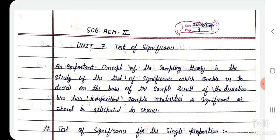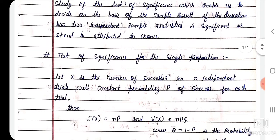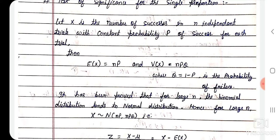To calculate the test of significance for different types of proportion, we first discuss the test of significance for single proportion. Let x be the number of successes in n independent trials with constant probability P of success for each trial. Then E(x) equals np, where E(x) represents the mean value — the mean of the binomial distribution is np. Here n is very large, and variance of x equals npq, where q equals 1 minus p, the probability of failure.